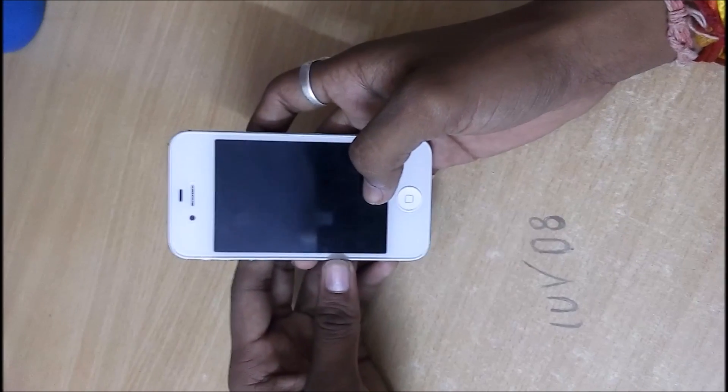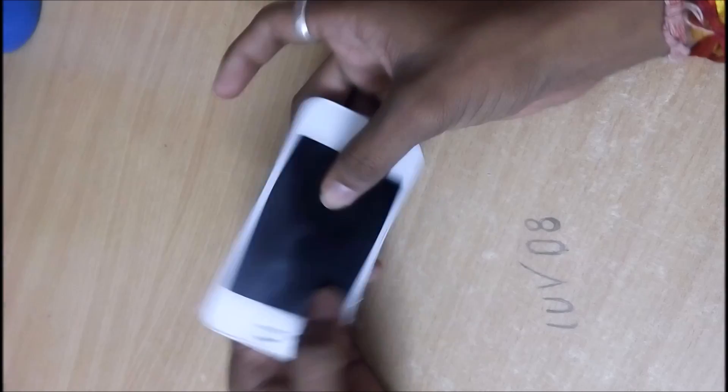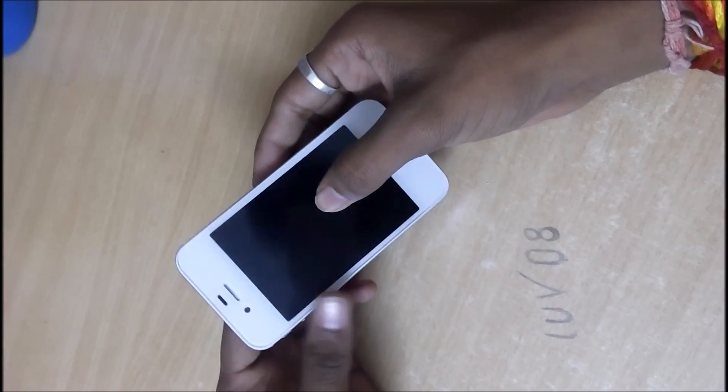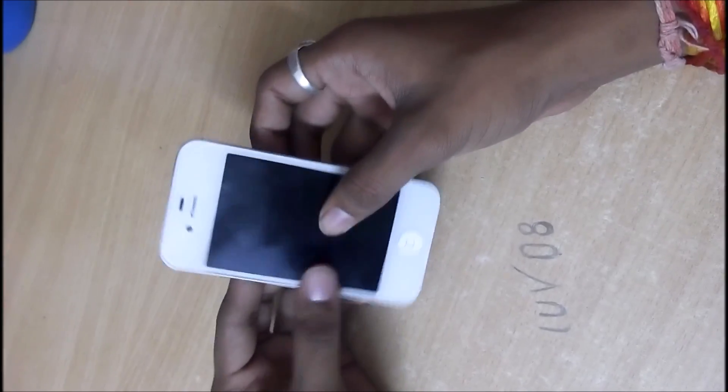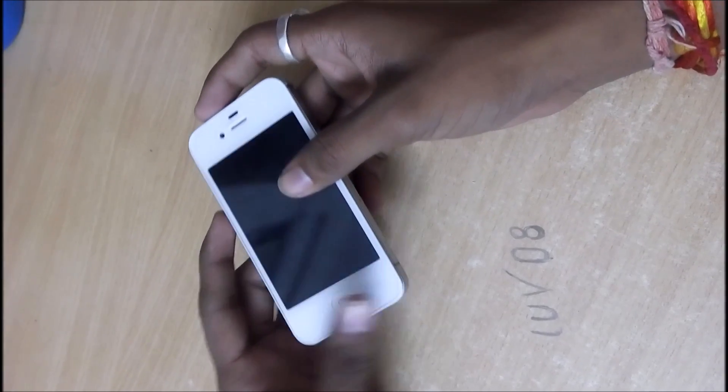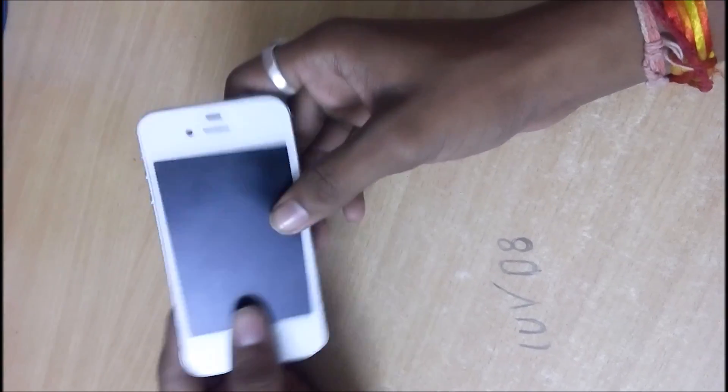Hey guys, this is Divesh Sharma. Today we have the iPhone 4s which was facing the volume bar problem and the earphone problem too. The sound was coming from the right side but not on the left side.